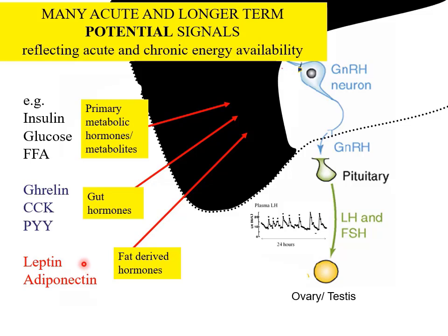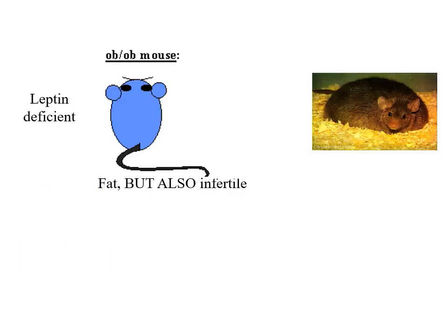We're going to concentrate on leptin, because leptin was one of the first to be identified as a potential signal coming from fat and having an input onto the hypothalamic control of the reproductive system. Leptin was first discovered by looking at a mouse mutant — a very fat mouse with a recessive gene — called the ob/ob mouse, for obese-obese.